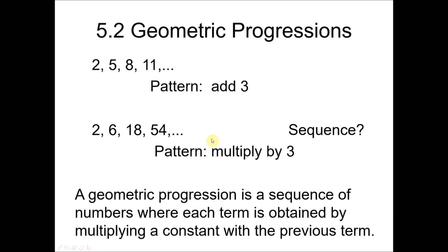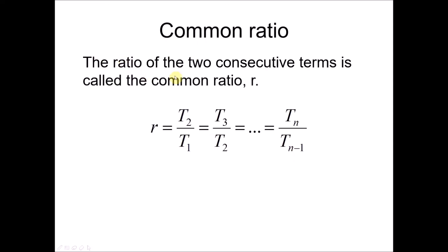Referring back to the previous example, the common ratio is the value 3. The common ratio is the ratio of two consecutive terms. To find the common ratio, denoted r, we take the second term divided by the first term, or the third term divided by the second term, or the nth term divided by the (n−1)th term.